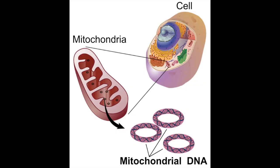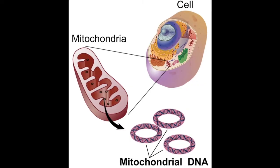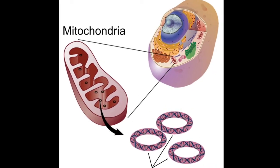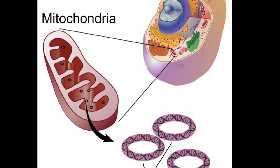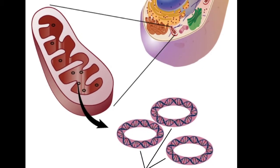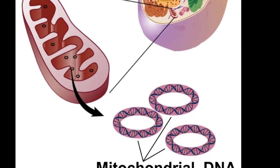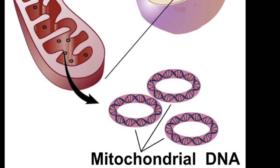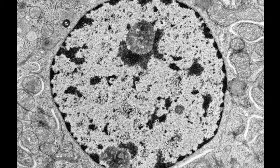DNA encodes everything in the cell; however, an exception is the mitochondria. The mitochondria have their own DNA that is circular and do not have histones.